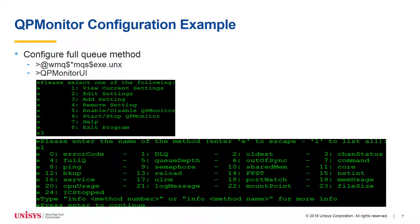Option 5, Enable or Disable QP Monitor, enables or disables the QP Monitor to automatically start or stop on key processor boot. Option 6, Start or Stop QP Monitor, displays the QP Monitor status—whether it is running or not—and allows it to be started or stopped. Option 7, Help, provides help on the menu and methods that can be configured. Option 8, Exit Program, exits the QP Monitor.